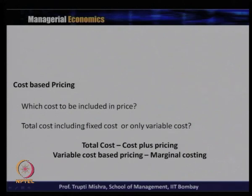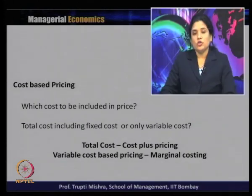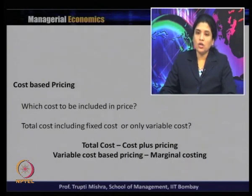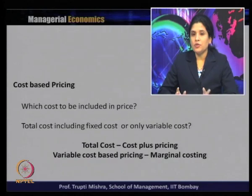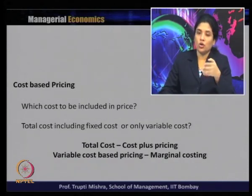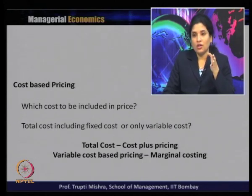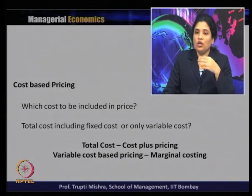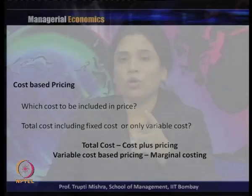The question is: which cost to be included in the price — whether it is the total cost including fixed cost, or only variable cost. If the total cost is used in price determination, this is known as cost plus pricing. If the variable cost is used, that is known as variable cost-based pricing, also called marginal cost pricing. So there are two main categories of cost-based pricing.